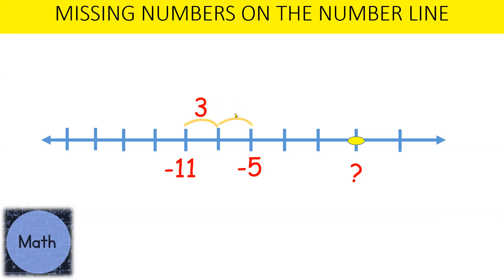Moving to the right because we are moving in a positive direction to determine the unknown value. Let's have a look at this step by step. Minus 11 plus positive 3 would give us minus 8. Moving one space to the right, minus 8 plus positive 3 would give us minus 5.